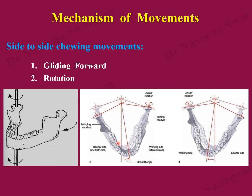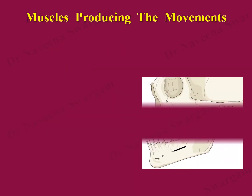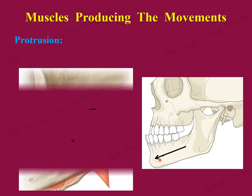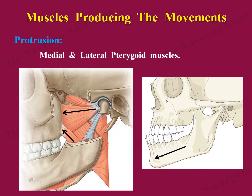While one head of the mandible is moving, the other head is fixed in its position. Protrusion of the mandible is produced by the medial and lateral pterygoid muscles, with a maximum range of protrusion of 10 mm.